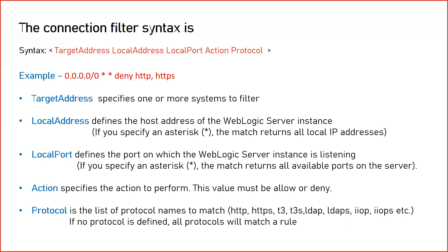Local port is the port on which you want to deny or allow the connection. For example, if you want to deny any connections on your WebLogic admin port running on 7001, then this will be port 7001. Action would be allow or deny. The last one is the protocol — which protocol you want to deny the connection: HTTP, HTTPS, T3, T3S, LDAP, IIOP, or different kinds of protocols supported by WebLogic. If you want to block a certain kind of call, you can specify it as well.